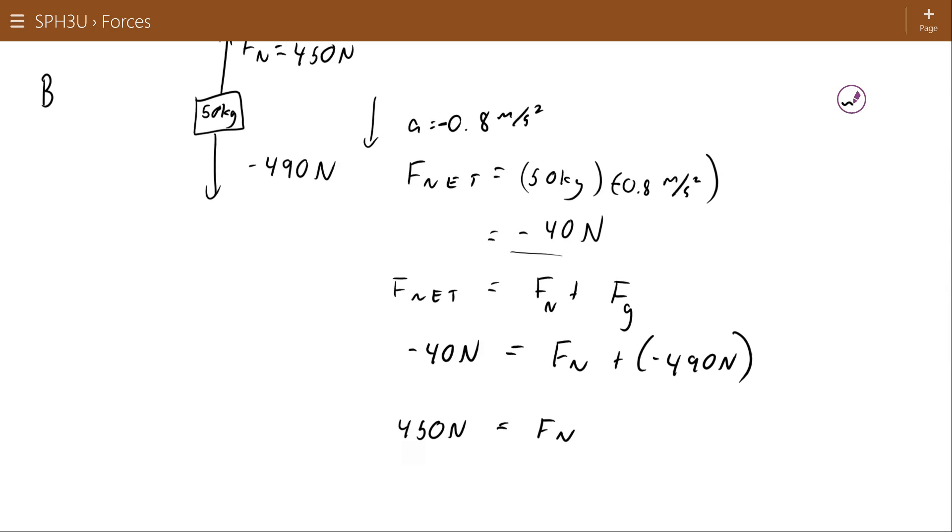Again, unless you have a fancy physics bathroom scale, it's going to read in kilograms. So you need to think what does that bathroom scale think the relationship between newtons and kilograms is, and that is 9.8. And you get 45.9 kilograms. So that's the mass that would read on the scale even though the person is 50. So look at that. They've lost like 4.1 kilograms.